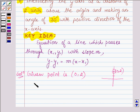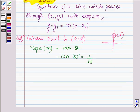And the slope, that is denoted by m, is given by tangent of theta, where theta is the angle made by the line with the positive direction of x-axis, and that is 30 degrees. So we have tan 30 degrees, this is equal to 1 upon root 3. So the slope of the line is 1 upon root 3.